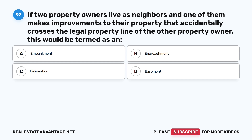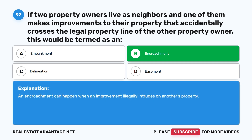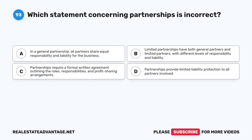Question 92: If two property owners live as neighbors and one of them makes improvements to their property that accidentally crosses the legal property line of the other property owner, this would be termed as what? A. Embankment. B. Encroachment. C. Delineation. D. Easement. The correct answer is B: Encroachment. An encroachment can happen when an improvement illegally intrudes on another's property.